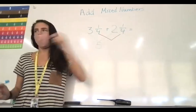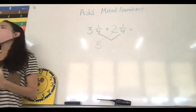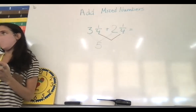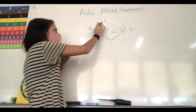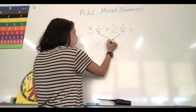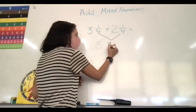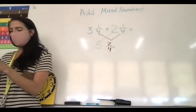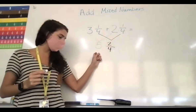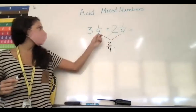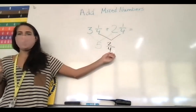What is 1 fourth plus 1 fourth? It's 2 fourths. We add our numerators, which gives us 2, and then our denominator stays the same. So it's 5 and 2 fourths. Again, we add our whole numbers, then we add our fractions, and we get our answer of 5 and 2 fourths.